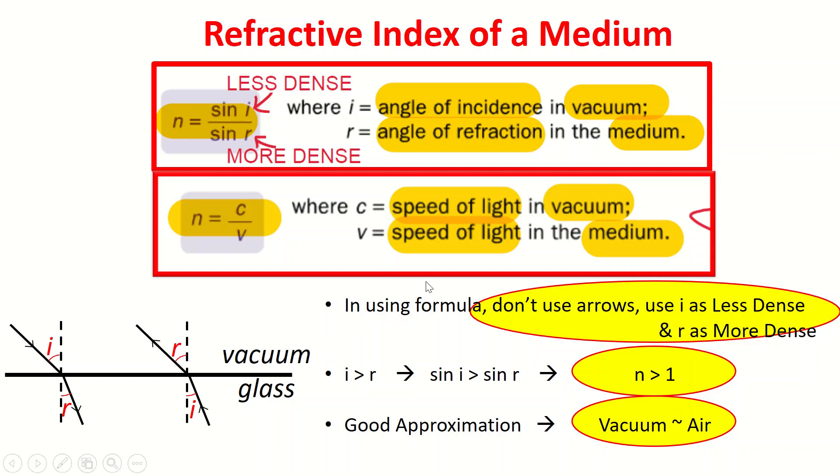Just a quick recap on the three key takeaways. When we use formula sine i over sine r to get refractive index, don't look at i and r as incident and refracted ray. Look at it based on is it my angle in the vacuum or is it the angle in glass?